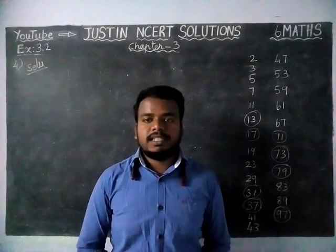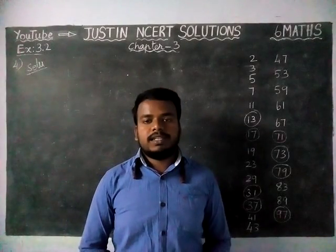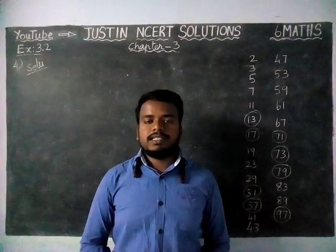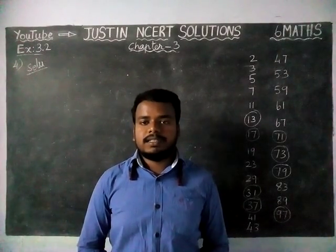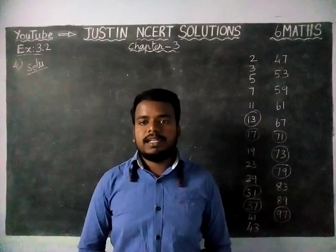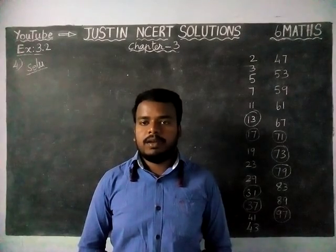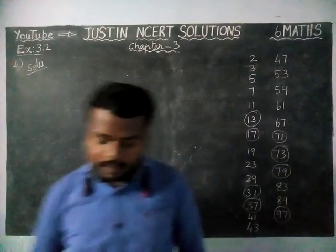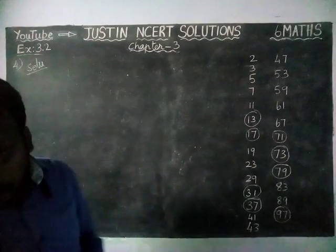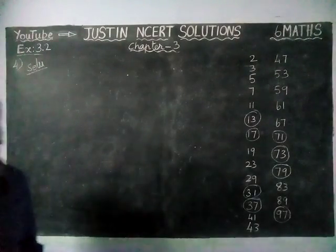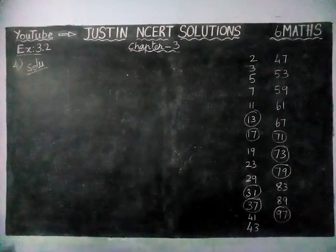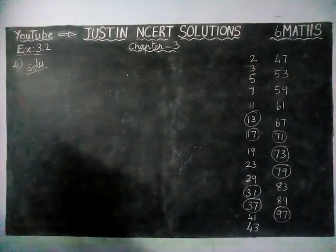Hi students, welcome to Justine NCRT Solutions. In this video, we are going to see 6th standard maths, chapter 3, exercise 3.2, 4th posting. Here, we have to write down separately the prime and composite numbers less than 20.